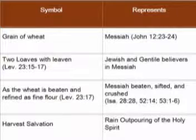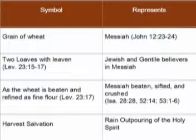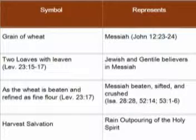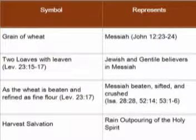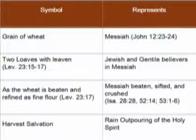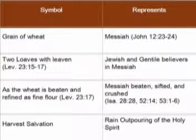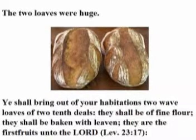Let's look at symbols and what they represent. Symbol one: a grain of wheat represents the Messiah, John 12:23–24. Symbol two: two loaves with leaven, Leviticus 23:15–17, represents Jewish and Gentile believers in Messiah. Symbol three: as the wheat is beaten and refined as fine flour, Leviticus 23:17, represents Messiah beaten, sifted, and crushed, Isaiah 28:28, 52:14, and 53:1–6. Symbol four: the harvest salvation represents the outpouring of the Holy Spirit.